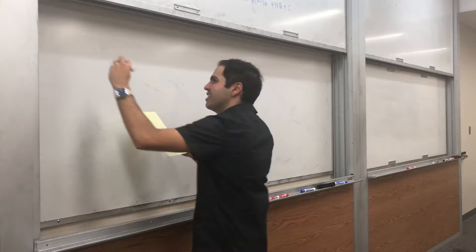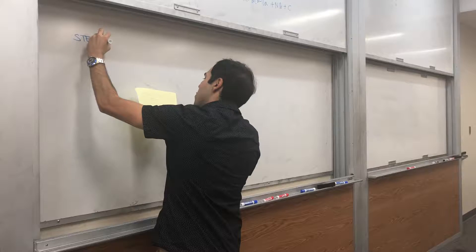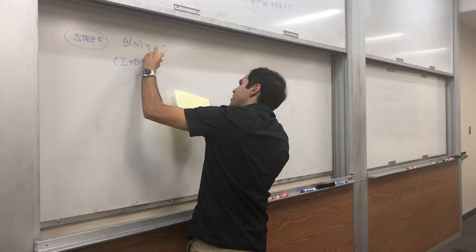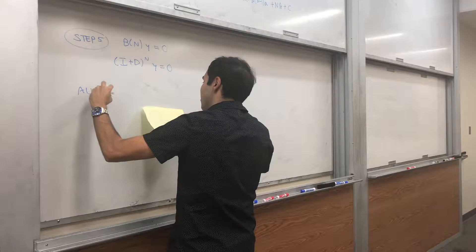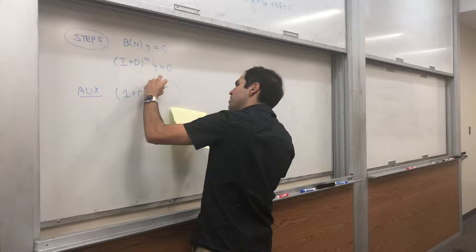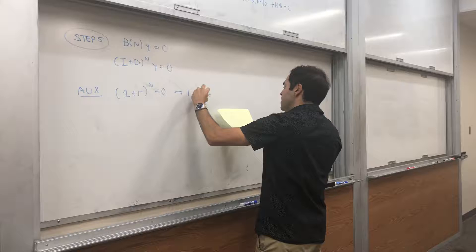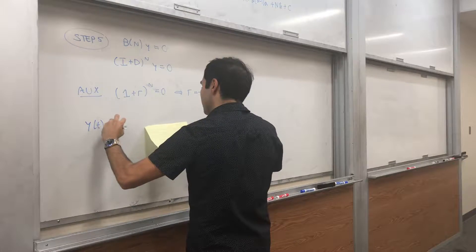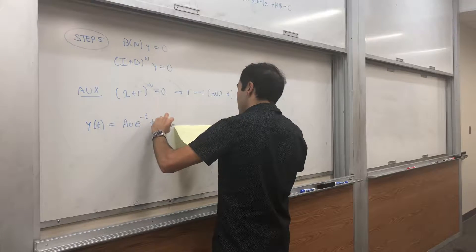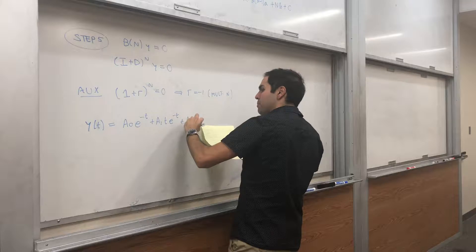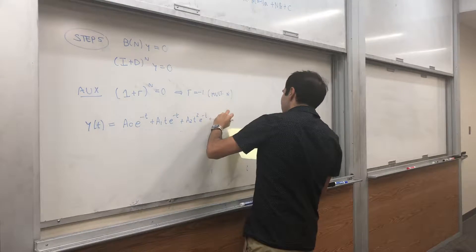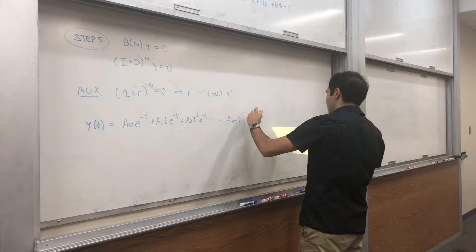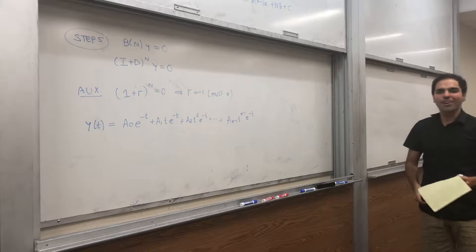Now for a little application — I like differential equations, so let's do binomial differential equations. Step five: how would you solve B_n(y) = 0? That's (I + D)^n(y) = 0. The auxiliary polynomial is (1 + r)^n = 0, which means r = -1 with multiplicity n. So the general solution is y = a_0*e^{-t} + a_1*t*e^{-t} + a_2*t^2*e^{-t} + ... + a_{n-1}*t^{n-1}*e^{-t}.